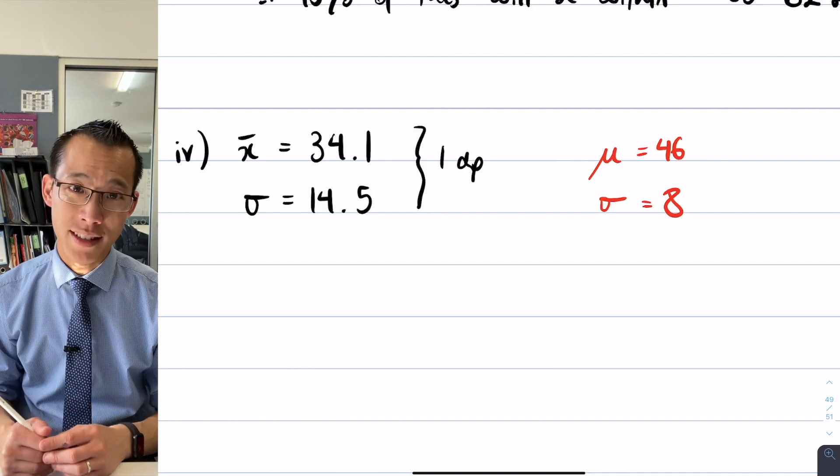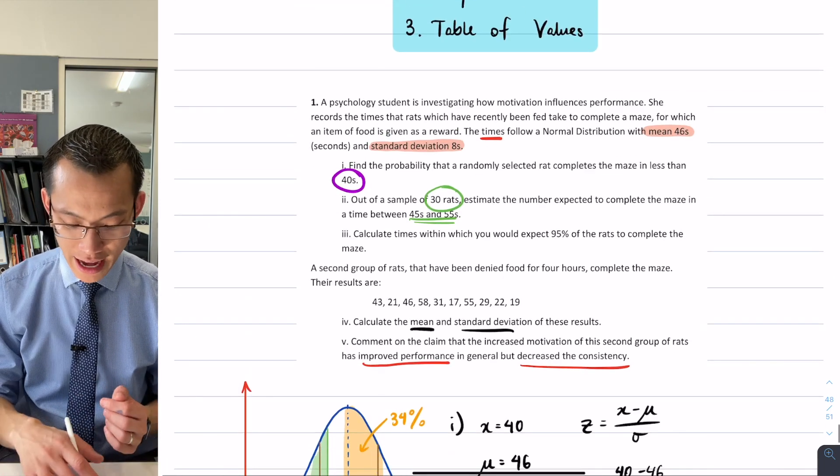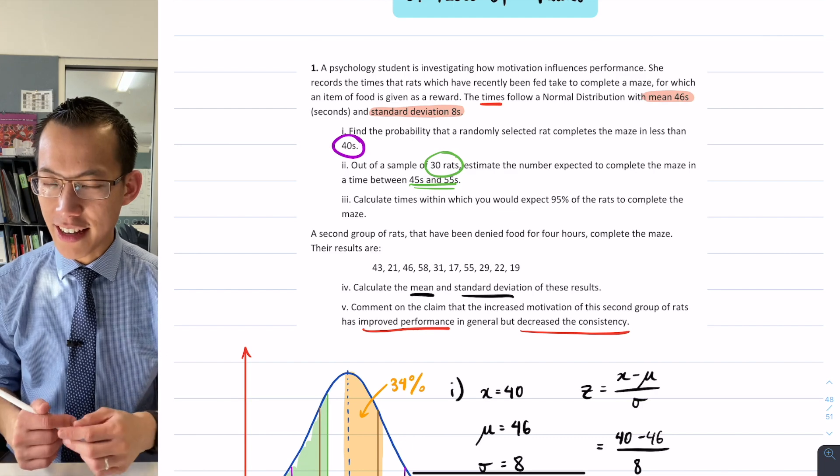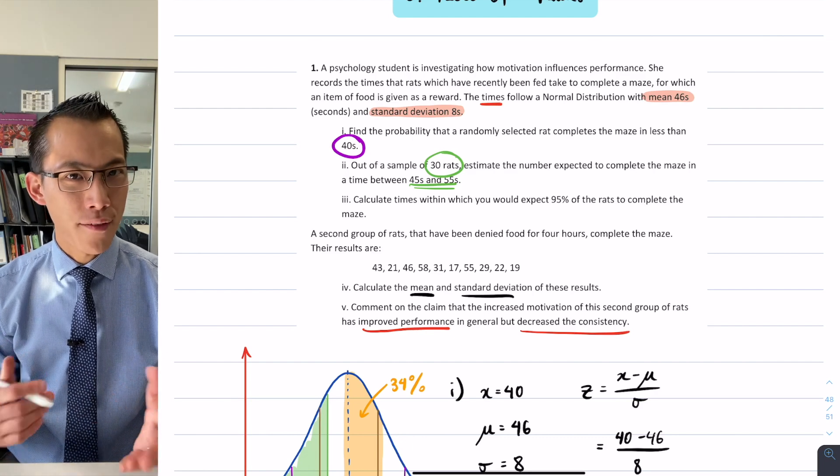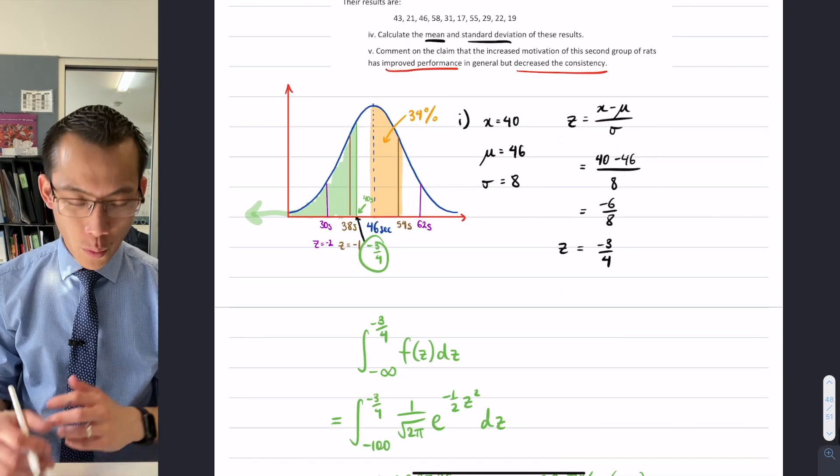Wider spread equals less consistent data. So I think we can—if you have a look here, it says comment on that claim—I think we can say that the data bears that out based on our calculation of mean and standard deviation for each of the data sets. So hopefully that all makes sense.